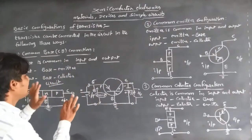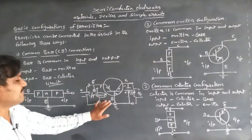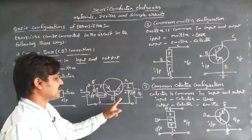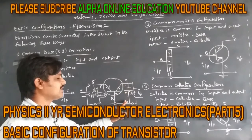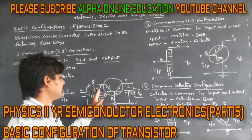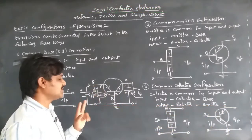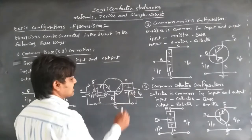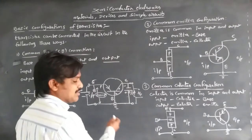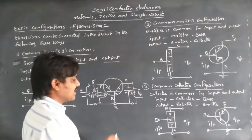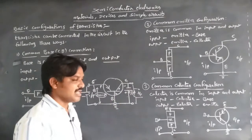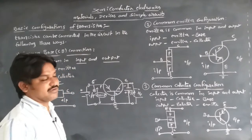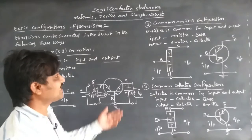Using this common base connection, we can get the output at the collector-base junction and the input at the emitter-base junction. The emitter current flows through the circuit, and we can measure the collector voltage using a voltmeter or ammeter connected in the circuit.